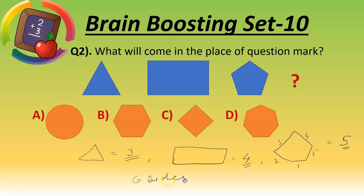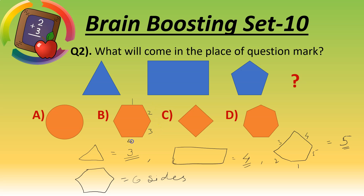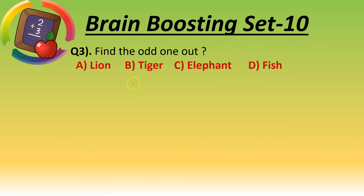Six sides means hexagon — one, two, three, four, five, six — like this. Option B is the right answer.